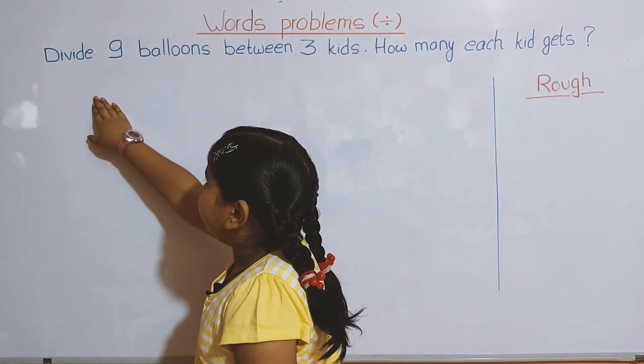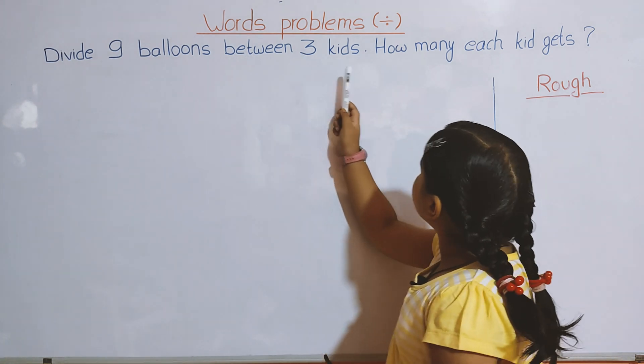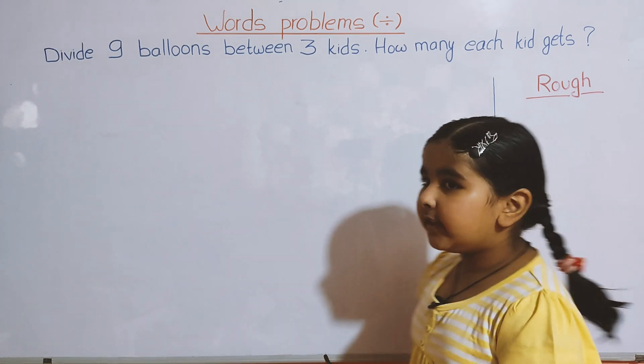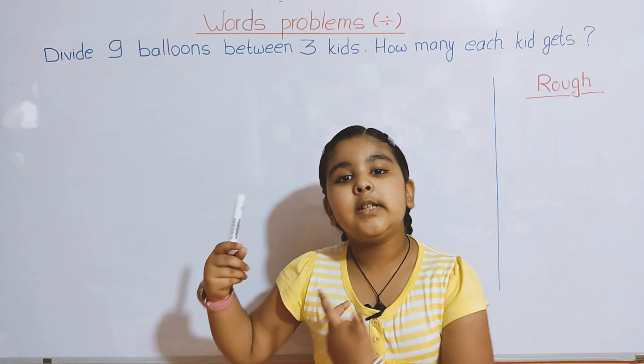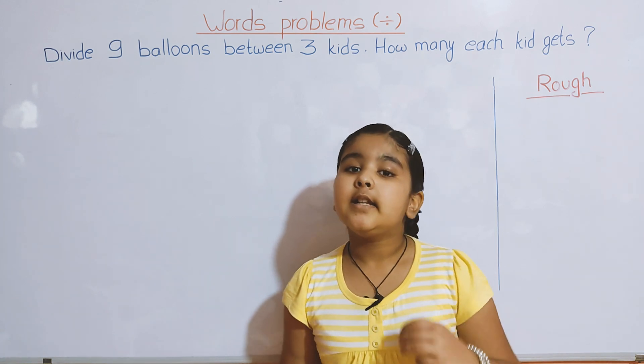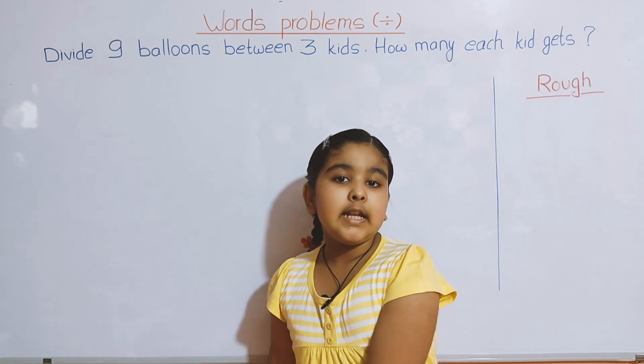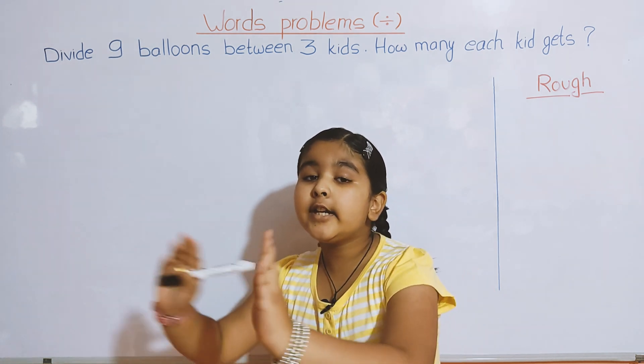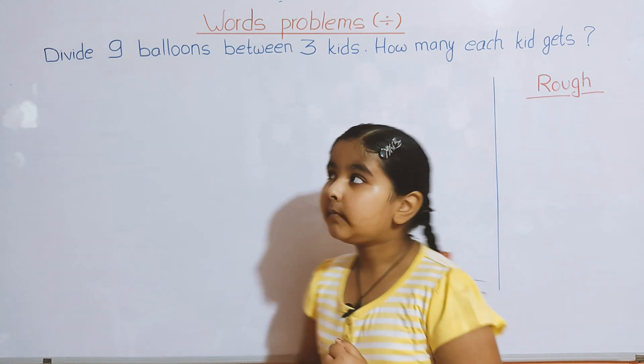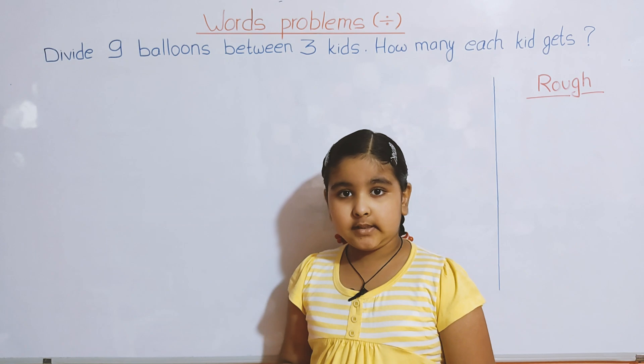Our first question is: divide 9 balloons between 3 kids. How many does each kid get? Just imagine there is a balloon man and he has 9 balloons. There are 3 kids and he gives the 3 kids equal balloons. We have to figure out how many each kid gets.